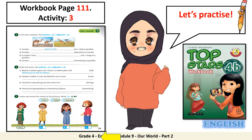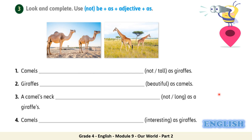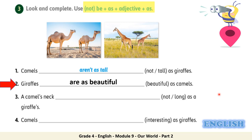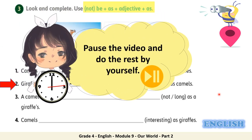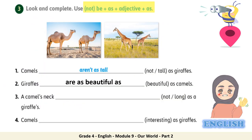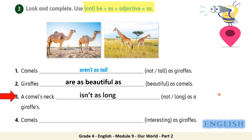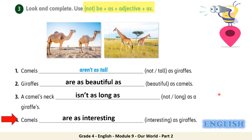Let's practice. Turn to your workbook page 111, activity number 3. Look and complete. Use not plus be plus as plus adjective plus as. We have pictures of camels and giraffes. Camels aren't as tall as giraffes. Giraffes are as beautiful as camels. A camel's neck isn't as long as a giraffe's. Camels are as interesting as giraffes.